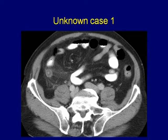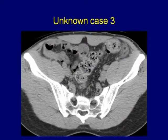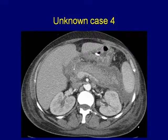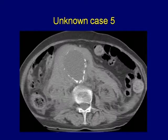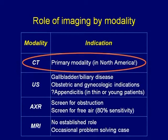Let's start with five unknown cases. The objectives will be to review the important, common, and classic causes of the acute abdomen. I'll be focusing mostly on CT imaging, and then we'll review some of the information that could come up in a discussion about these entities.